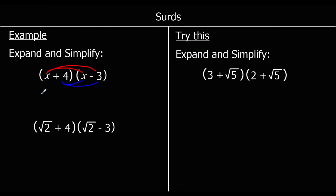So we've got x times x, which is x squared. x times negative 3, which is negative 3x. Then we've got 4 times x, which is 4x. And we've got positive 4 times negative 3. Positive times negative is negative, and 4 threes are 12.